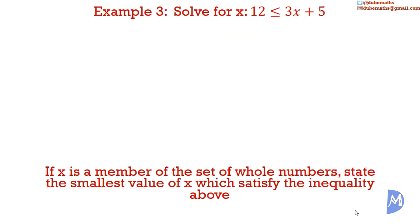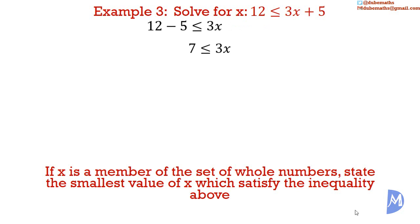Third example: Solve for x. 12 is less than or equal to 3x plus 5. Again, we want x's on one side and numbers on the other. Since we already have a number on the left-hand side, we subtract 5 from both sides to move the 5 from the right-hand side. Positive 5 subtract 5 gives 0; 12 subtract 5 equals 7. We want x alone on the right-hand side, so we divide both sides by 3. The 3's cancel, giving 7 over 3 is less than or equal to x. We switch sides and the sign reverses: x is greater than or equal to 7 over 3.